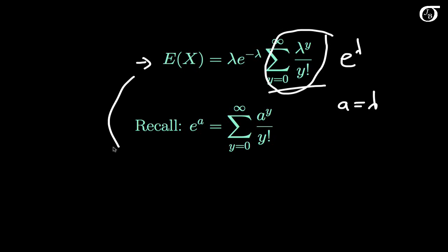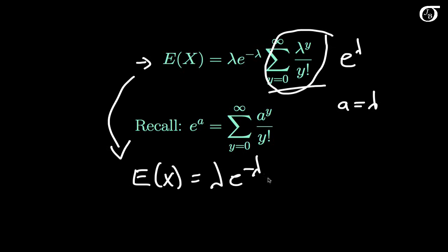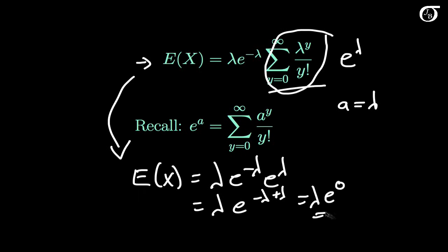Our expectation of x is equal to lambda times e to the minus lambda times e to the lambda, which is lambda times e to the minus lambda plus lambda, which is lambda times e to the 0, which is of course lambda. So the expectation or mean of a Poisson random variable is lambda.